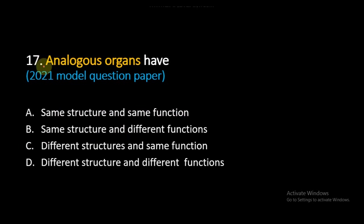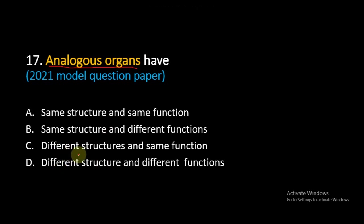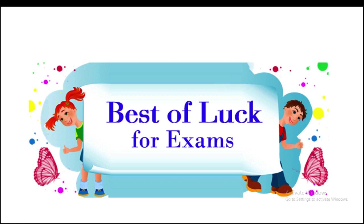Question number 17, also asked in the 2021 model question paper: Analogous organs have — Option A: same structure and same function, Option B: same structure and different functions, Option C: different structures and same function, Option D: different structure and different functions. Organs which have the same function but different structure are called analogous organs, so option C is the right answer.